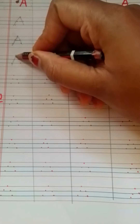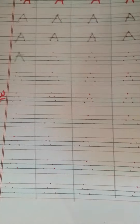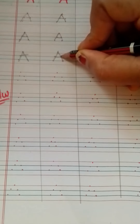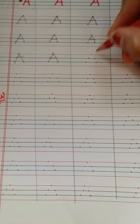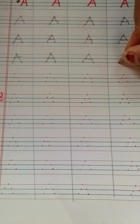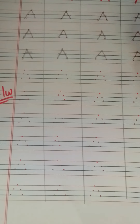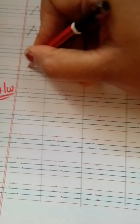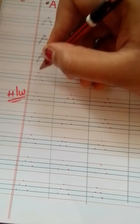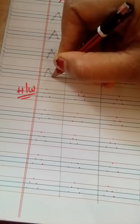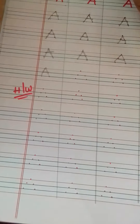Left slanting line, right slanting line, sleeping line — A. Did you understand how to trace? Now, this is top line, these are two middle lines. From top line to second middle line — left slanting line. Again from top line to second middle line — right slanting line, sleeping line. A.